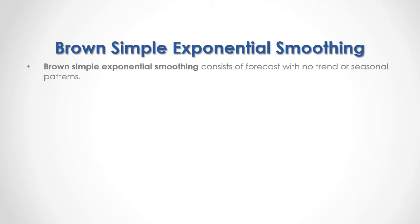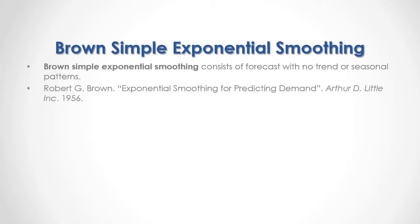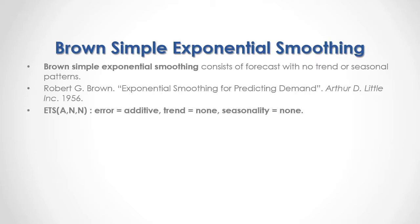An example of an Exponential Smoothing Method is Brown's Simple Exponential Smoothing, which consists of forecasts with no trend or seasonal patterns. For full reference, I recommend that you read Robert Brown, Exponential Smoothing for Predicting Demand, published by Arthur D. Little Inc. in 1956. Its ETS notation is ANN, in which Error is additive, there is no trend and no seasonality.